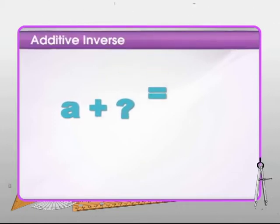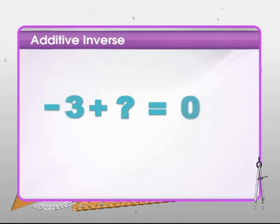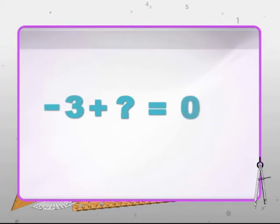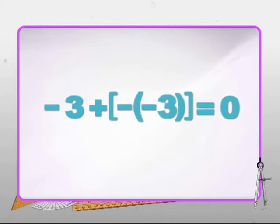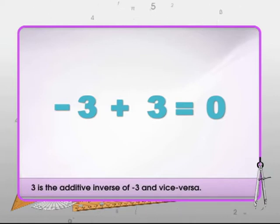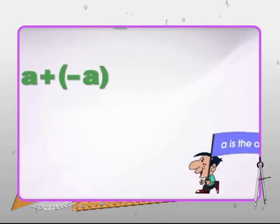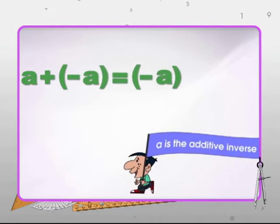What should be added to an integer — say, minus 3 — to get the identity element, which is 0? The answer is its negative, which is 3. So 3 is the additive inverse of minus 3. In general, the additive inverse of a number yields the identity element 0 on adding. For any integer a, minus a is the additive inverse of a, and vice versa.